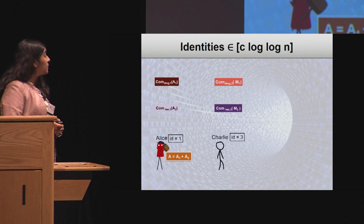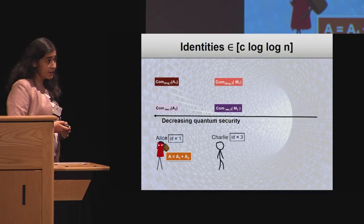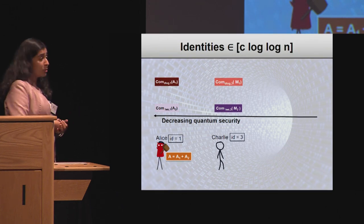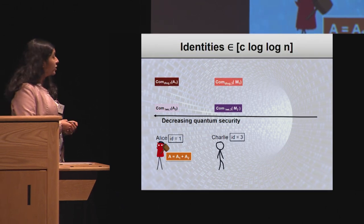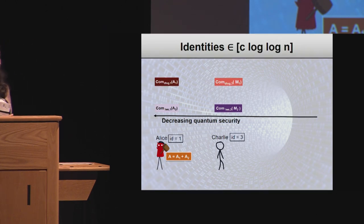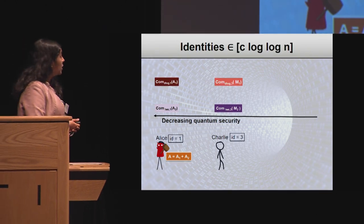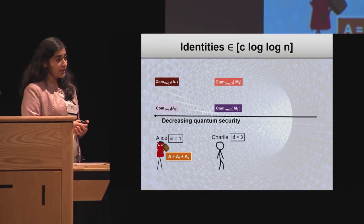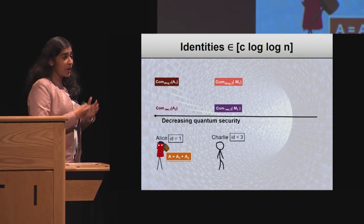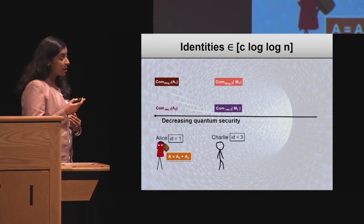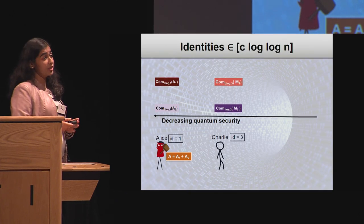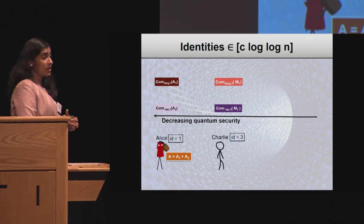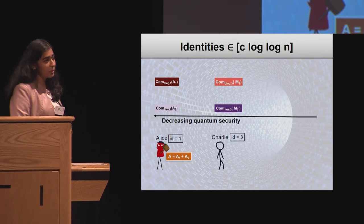This means it's possible to break all commitments except the one on the bottom right of the slide in quantum time t, and the commitment on the bottom right corner should still remain secure. This implies that A1 and A2 are jointly extractable in quantum polynomial time t, whereas M2 remains hidden. This means A must necessarily be independent of one of the shares M2 of Charlie's message, and therefore A must necessarily be independent of the message M. So we've been able to argue non-malleability in both directions.